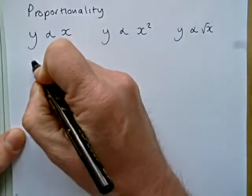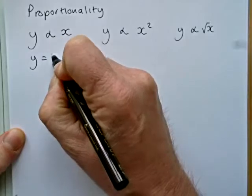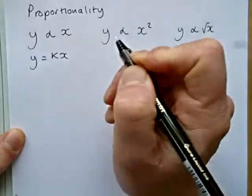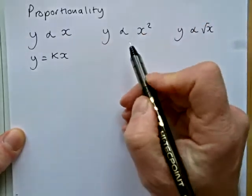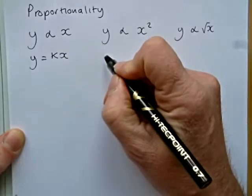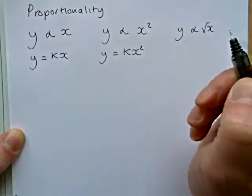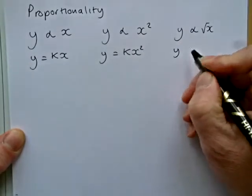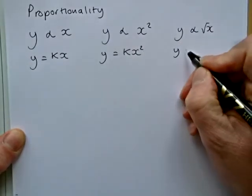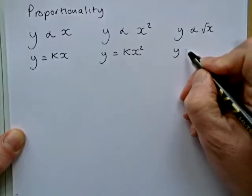And what that actually means then is that y equals something times x. If we move on to y is proportional to x squared, this means that y equals something times x squared. And then finally the third one that tends to come up is y is proportional to the square root of x.